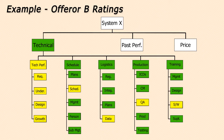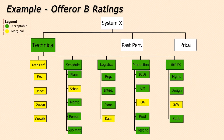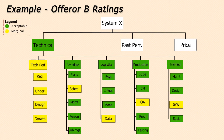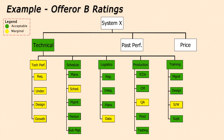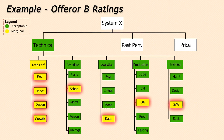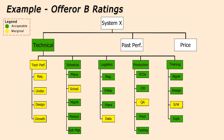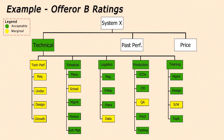Now suppose we have a second offeror who is given these ratings in that same technical factor. As before, the green represents a rating of acceptable, and the yellow represents a rating of marginal. This time, out of 22 elements being evaluated, eight are rated marginal. And notice that, although there are marginal elements under every sub-factor, when the ratings are rolled up to the sub-factor level, there is only one sub-factor that retains the marginal rating. Now notice that when the five sub-factors are rolled up to a factor rating, it is again acceptable.